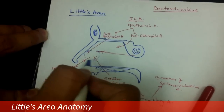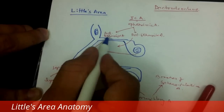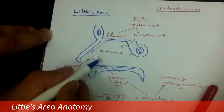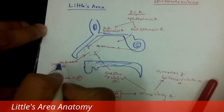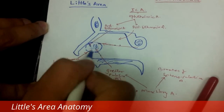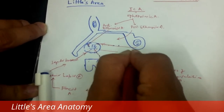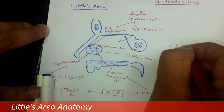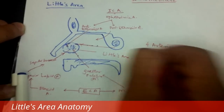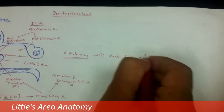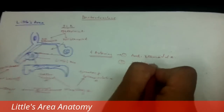So this area is where all four arteries anastomose with each other: the anterior ethmoidal artery, the septal branch of the sphenopalatine artery, the greater palatine artery, and the septal branch of the superior labial artery. This area is called Little's area, and there are four arteries meeting here. The first artery is the anterior ethmoidal artery.